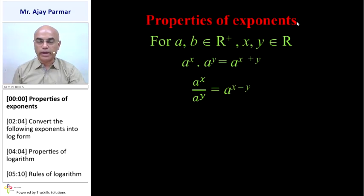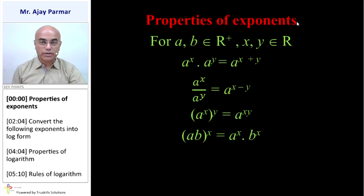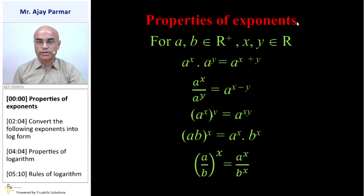a raised to x divided by a raised to y equals a raised to x minus y. And a raised to x, whole raised to y, gives the product of the powers: a raised to xy. Also, ab whole raised to x equals a raised to x multiplied by b raised to x. And a upon b whole raised to x equals a raised to x upon b raised to x. Remember, we cannot apply this type of rule for addition or subtraction of numbers.